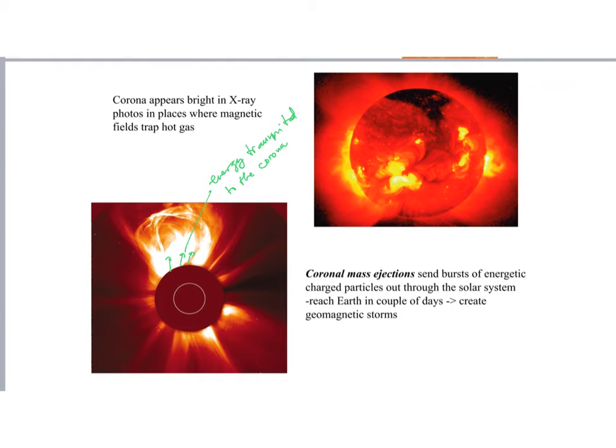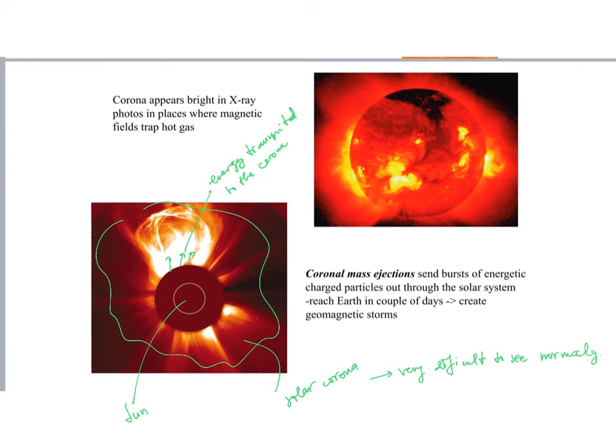So here's the Sun, and this is an image with a coronagraph. What you see around here is basically the solar corona, and that is very difficult to see normally. Solar eclipses offer the best opportunity to observe the corona. So now with the coronagraph, in this image, the solar eclipse phenomenon is basically simulated.